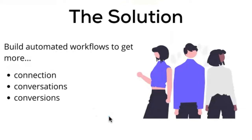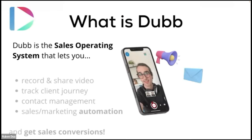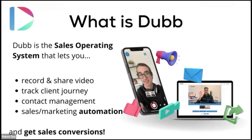The solution, of course, is to build automated workflows to get more connections, conversations, and conversions. Dubb is the sales operating system that lets you record and share video, track the client journey, manage your contacts, and now — what we're going to be talking about — the sales and marketing automation to get more sales conversions.